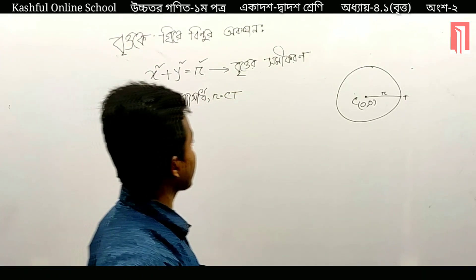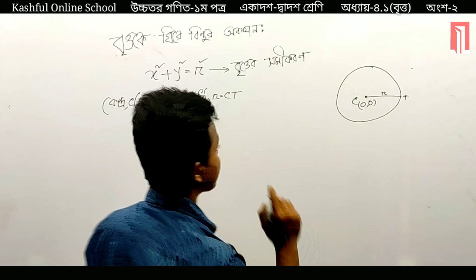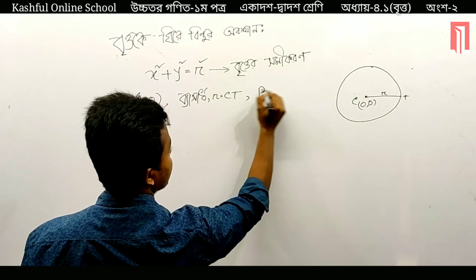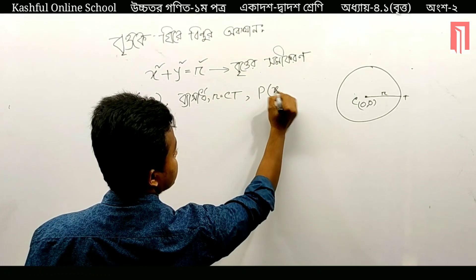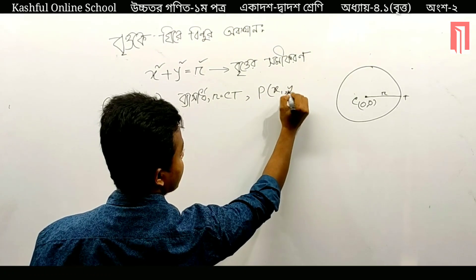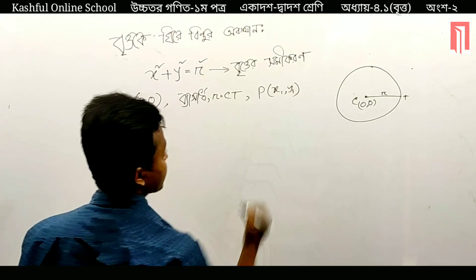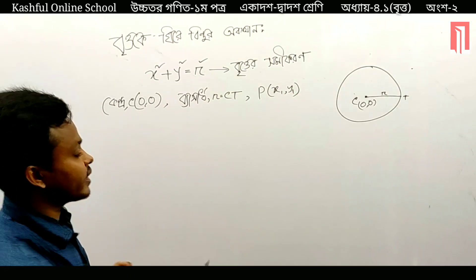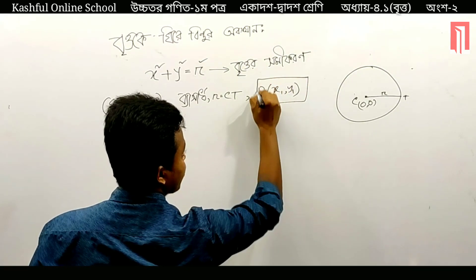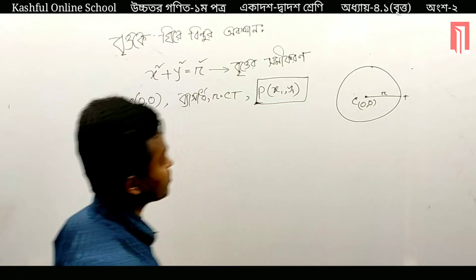Now, we have two points. The point is P. The point is X1, Y1. This is the main character.